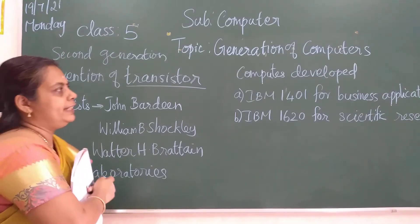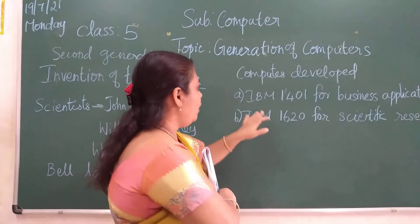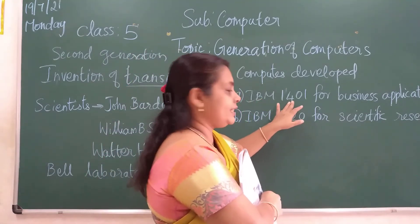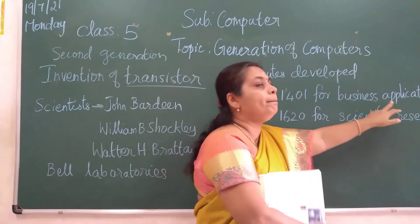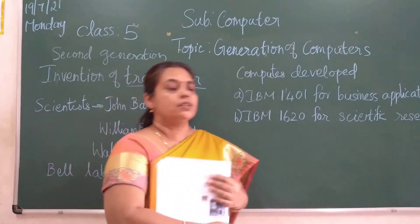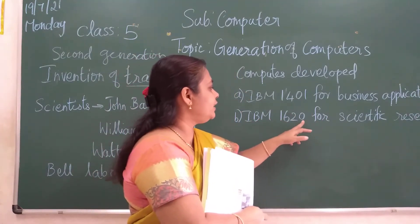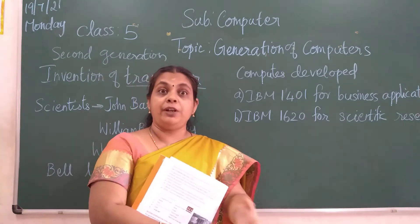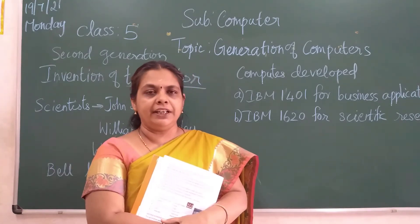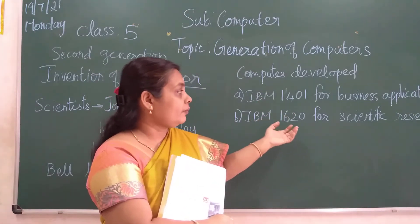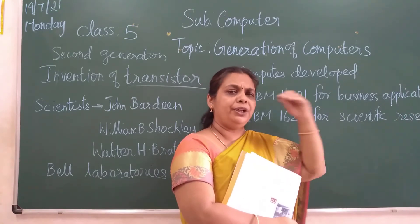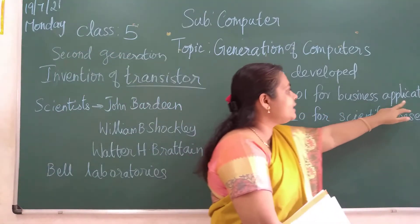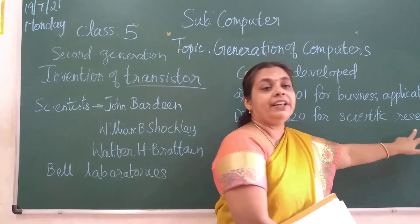Now what are the computers they developed for usage? IBM — that is International Business Machines — developed number series computers. IBM 1401 was for business applications, and IBM 1620 was for scientific research. So two computers were developed: one for business applications and another for scientific research.